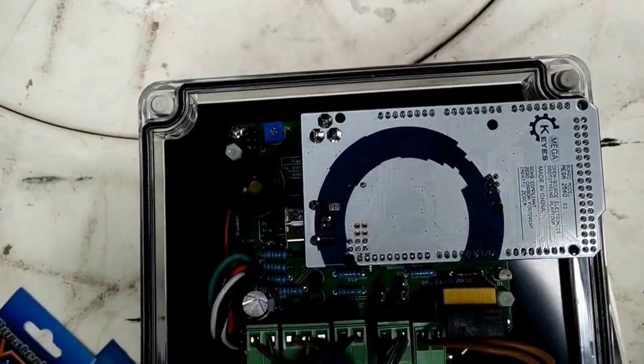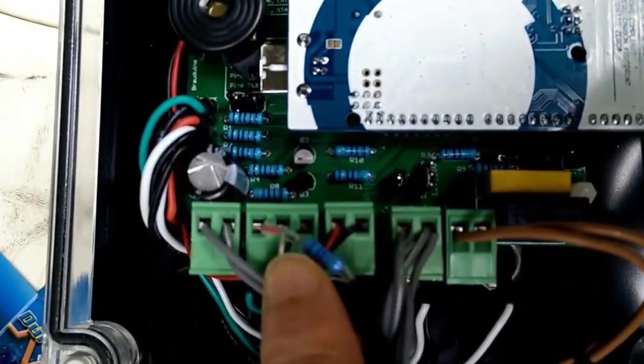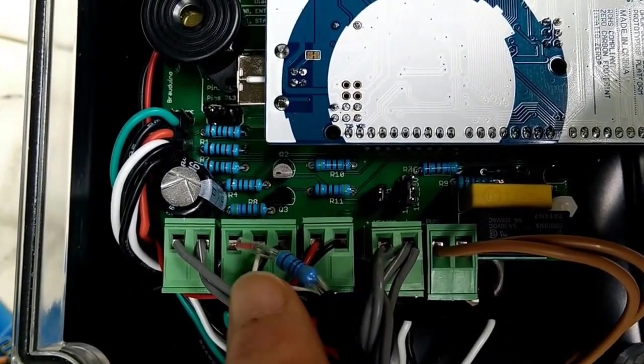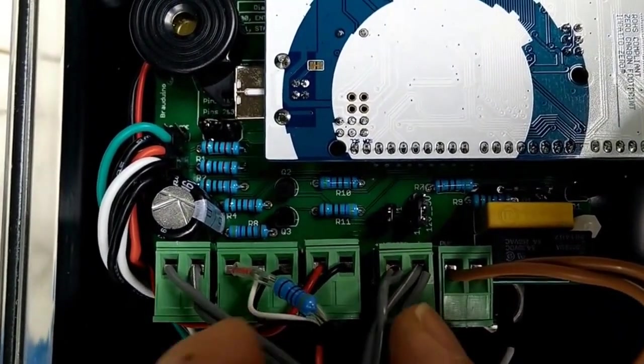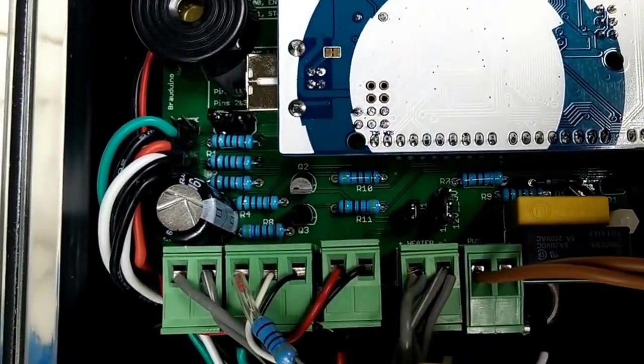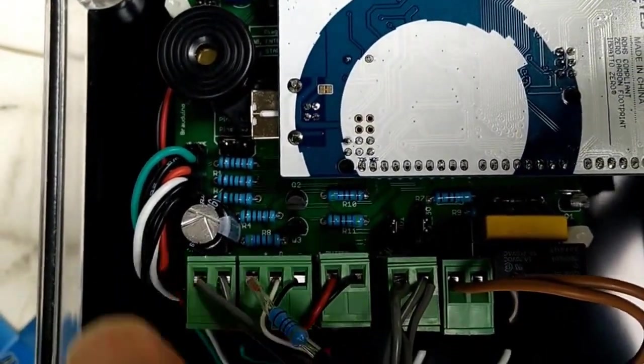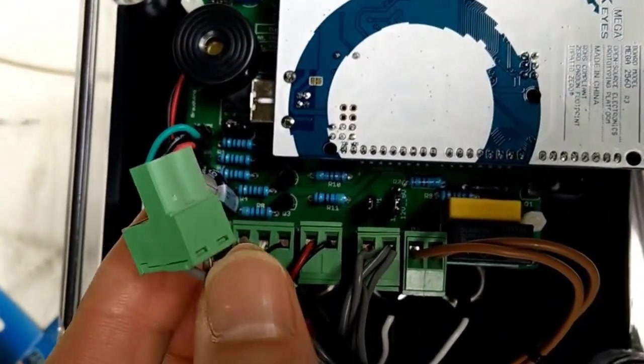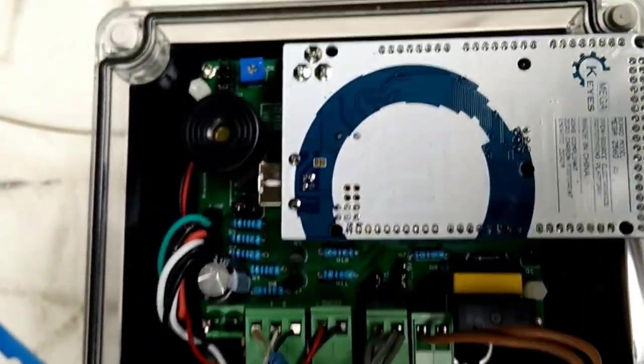Here we've got our temperature probe in the same way. That's going to be power in on the left, data on the white, so red, white, and black on the inside. Now, all of these terminals are pluggable, so nice and easy. All you need to do is just grab it, pull it out, and then you can wire it outside the box and just leave that hanging.